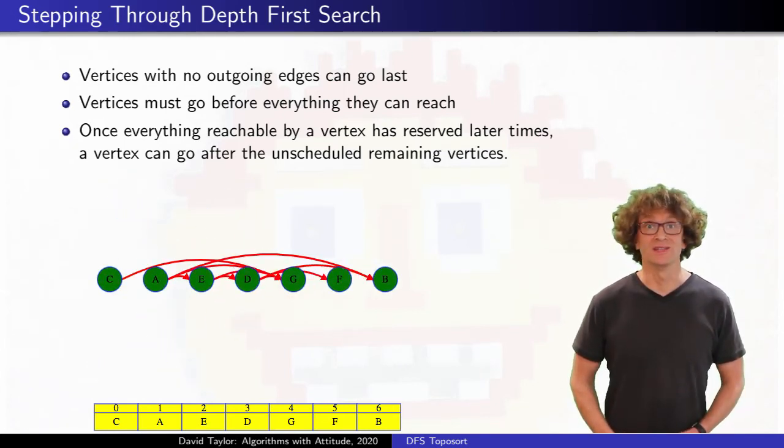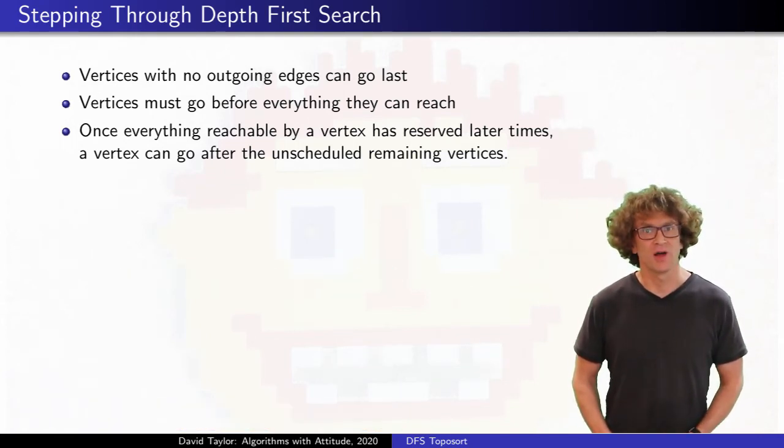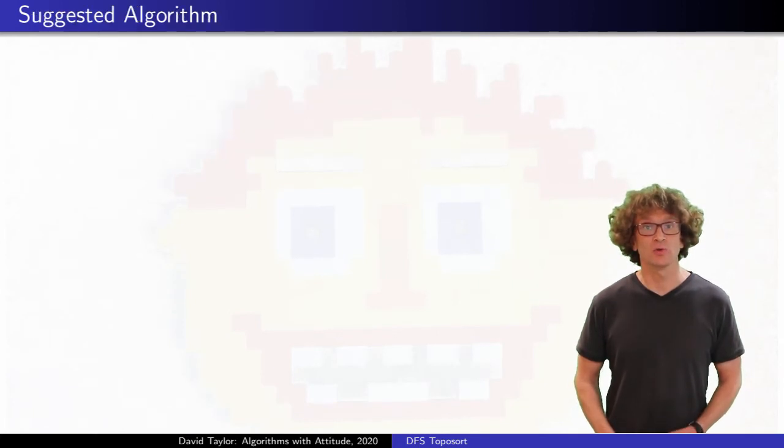Rearranging the graph into this order, we can see that all edges go from left to right, so the algorithm worked, even though it happens to give a different order than the one we got from Kahn's algorithm. But just to clarify, exactly what is the algorithm we used here?